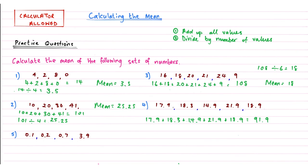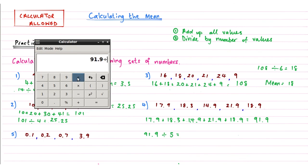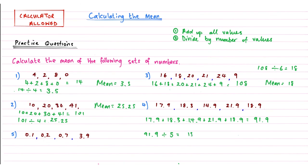And we'll add these into our calculator. 17.9 plus 18.3 plus 14.9 plus 21.9 plus 18.9 gives me an answer of 91.9. Again, that's a pretty awkward number to divide, 91.9. And what do we need to divide this by? 1, 2, 3, 4, 5. So divide 91.9 by 5. 91.9 divided by 5, and that gives me an answer of 18.38. So my mean for question 4 is 18.38.